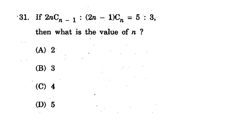Question 31: C(n−1, 2n−1) / C(n) = 5:3. Find the value of n. You can substitute each option and check which gives this ratio. The correct answer is option D - n = 5. Substituting n=5: C(4,9)/C(5) gives the ratio 5:3.